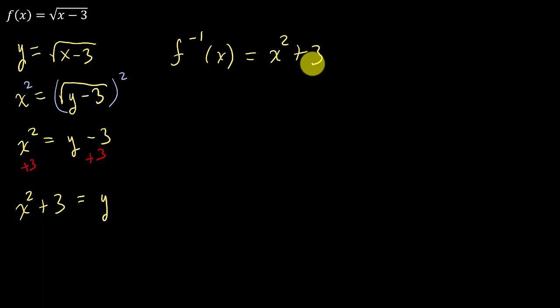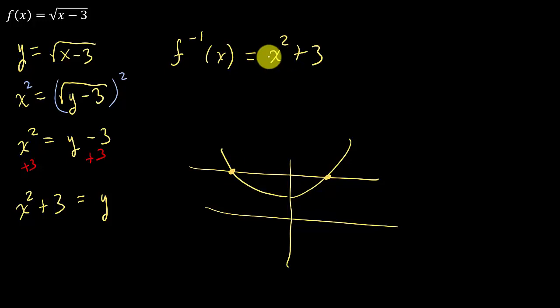But now look at this. You may notice a problem here. Remember, in order for a function to have an inverse, it has to be 1 to 1. Well, this is a quadratic function. And if you look at this, the graph of this looks like this. It fails the horizontal line test. If you draw a horizontal line, it intersects in more than one spot. So that means it's not 1 to 1, which means this doesn't have an inverse.